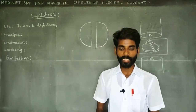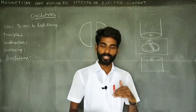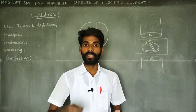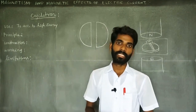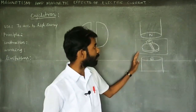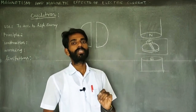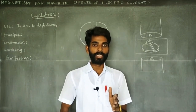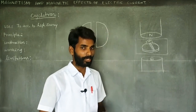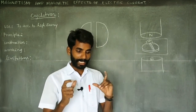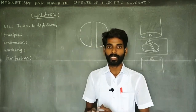If you are using the cyclotron, the charged particle is how to accelerate to high energy by the help of this cyclotron. Charged particles are accelerated to high energy by the help of this cyclotron. We will also talk about the principle of this device.